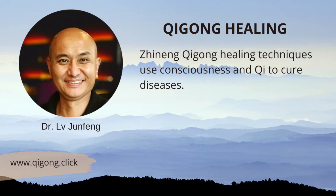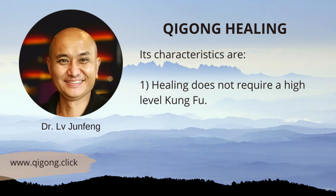The Zhineng Qigong healing technique uses consciousness and qi to cure disease — using our mind, our idea, our thought, along with qi. Your mind mobilizes qi to cure disease. Its first characteristic is that healing does not require a high level of kung fu. After you have learned lift qi up and pour qi down — level one in Zhineng Qigong — you can do healing with qi.